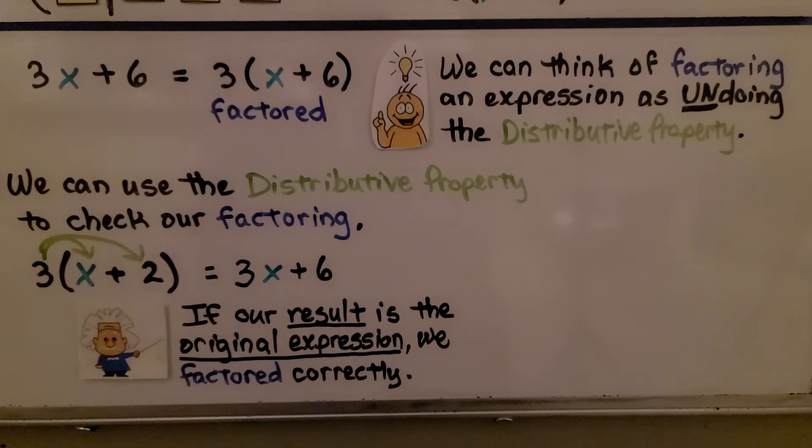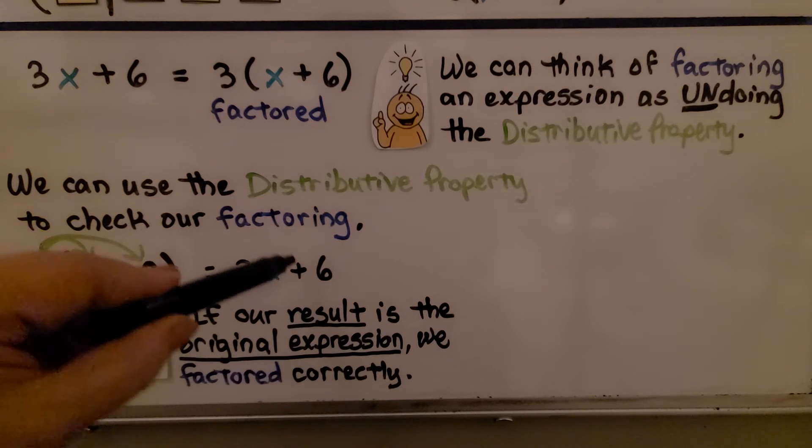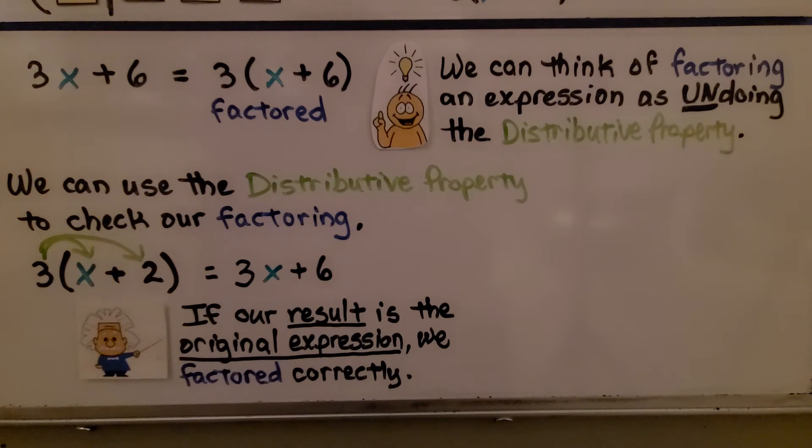We can think of factoring an expression as undoing the distributive property. We're going backwards. We can use the distributive property to check our factoring. 3 times x would be 3x, and 3 times positive 2 would be plus 6. If our result is the original expression, we factored correctly.